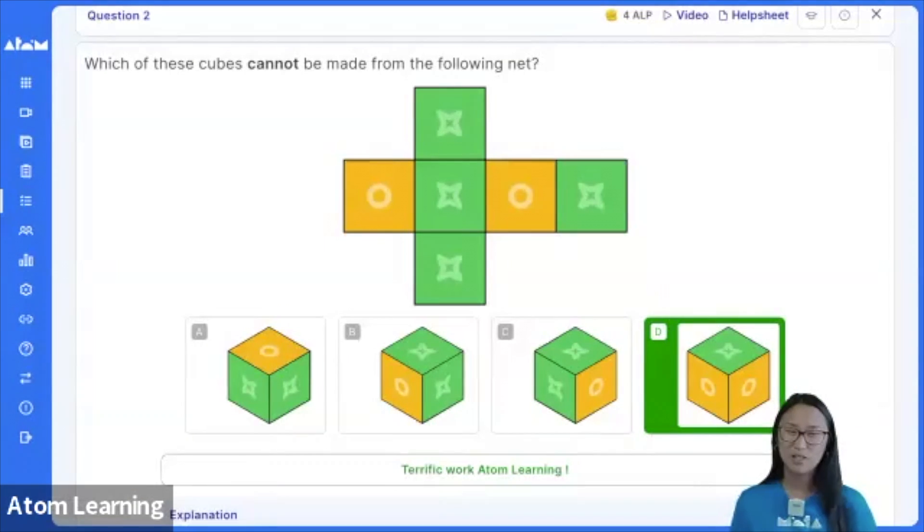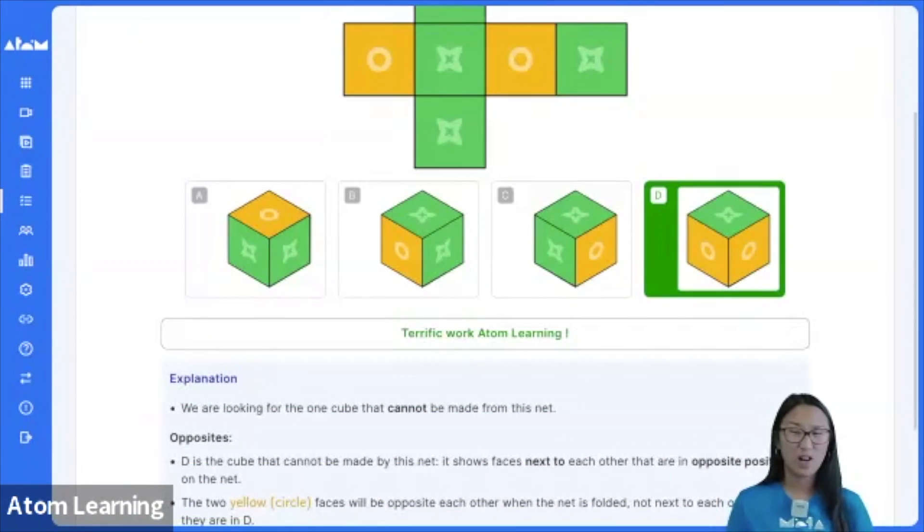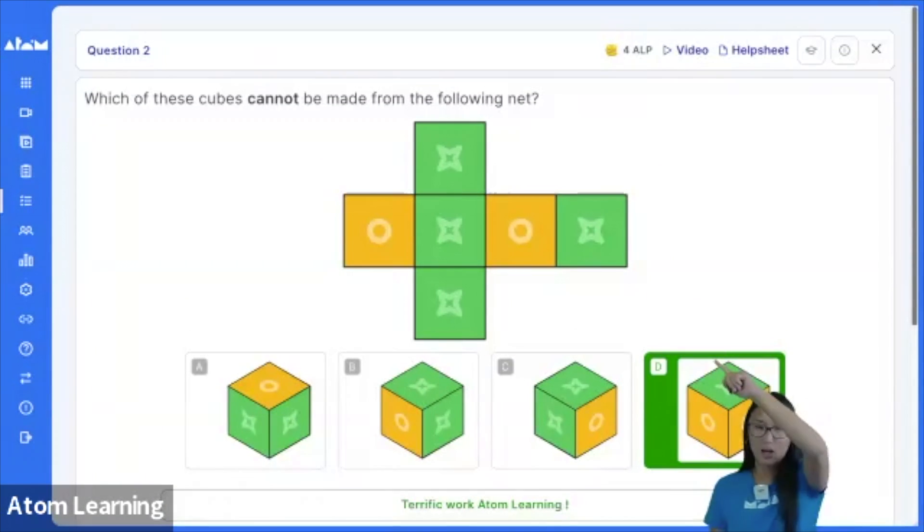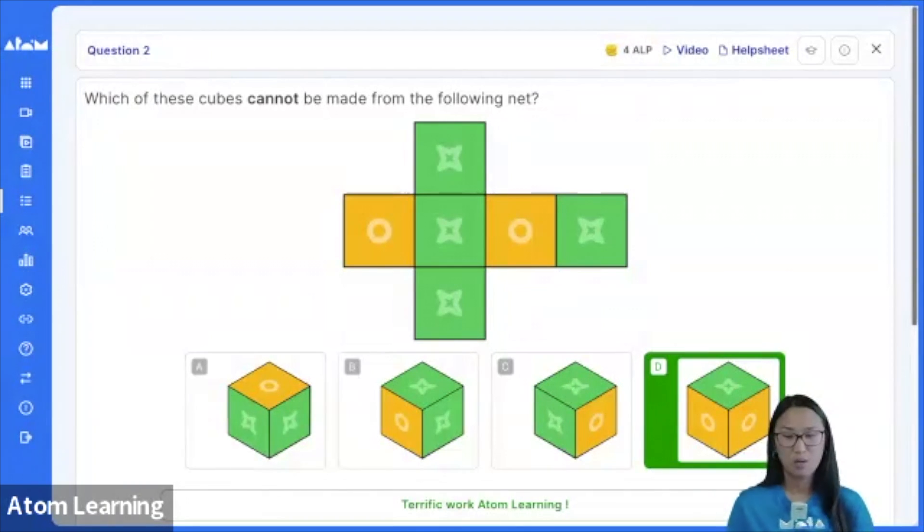And that is absolutely right. How do we know? It violates the opposites rule. So if we look at our net here and look at where the yellow faces are, they are opposite each other. So they would never appear in the same cube.